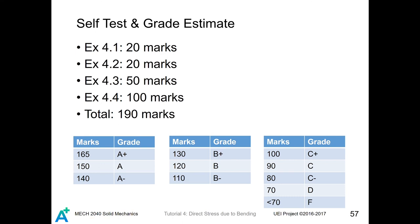We also did centroid-finding techniques: average x and average y, computing centroid of composite shapes, and setting up the temporary x prime y prime coordinate system. We talked about design considerations: maximum allowable stress and section modulus concepts. In this tutorial there were four exercises: 4.1 and 4.2 are fundamental, exercise 4.3 relates to aircraft structures, and example 4.4 contains every single concept in this tutorial. The total mark is 198 marks — refer to the provided tables to estimate your grade. You are also recommended to do the practice problem set. Thanks for watching, and see you next week.